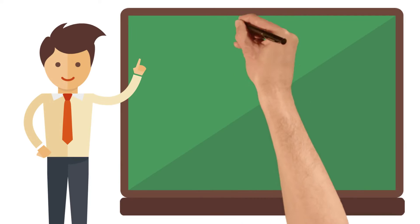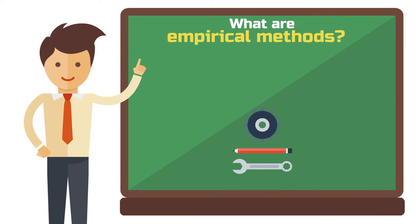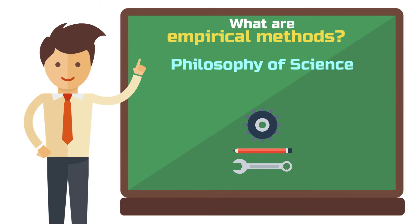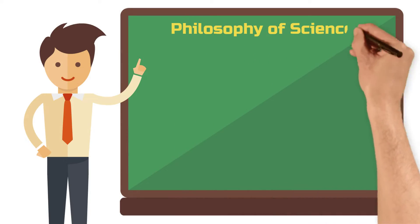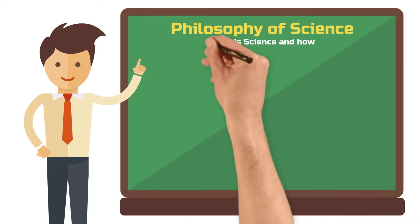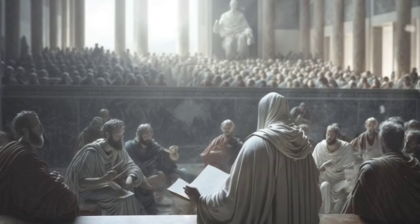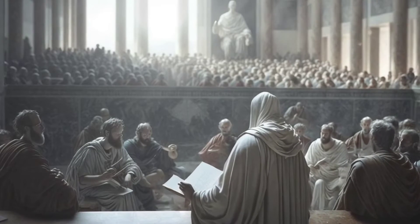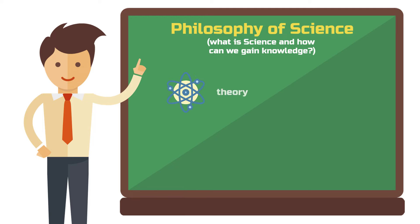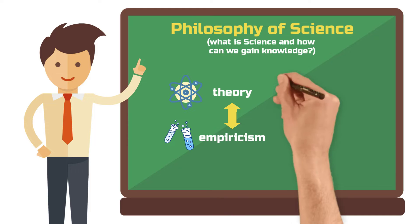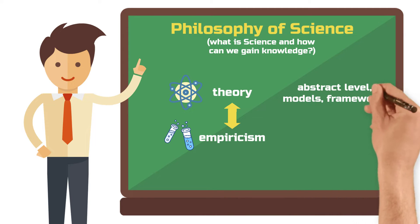What are empirical methods? The starting point for questions like this is always the field of philosophy of science. I will attempt to quickly simplify the basic assumptions here, but still provide helpful insights for your practical application. Philosophy of science deals with the question of how we as researchers can gain knowledge or understanding. After centuries of philosophical deliberations and different schools of thought, it has become clear that science operates quite well with the interplay of theory and empiricism.